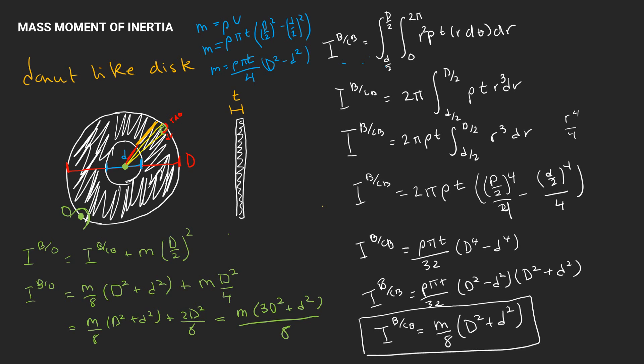In the following video, I'm going to show you how we use these calculations for the mass moment of inertia of this donut-like disc to calculate the equations of motion when the donut hinges about point O.